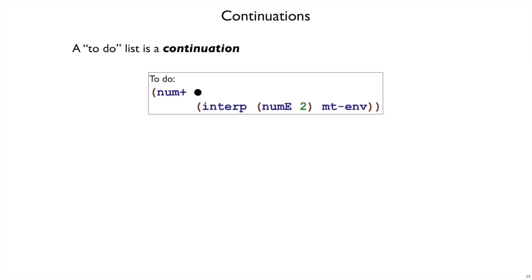So here's a continuation, or to-do list, that says once we get a value, continue on by interping and adding with num plus.